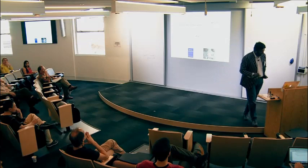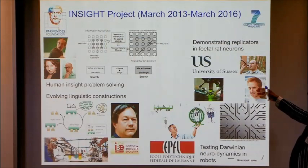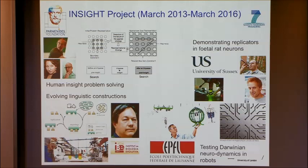We're actually exploring this now in a project with Kevin Starris in Sussex, who's got fetal rat neuron cultures, and we're trying to do seeding experiments to see what can be copied. Let's examine what natural selection is first.